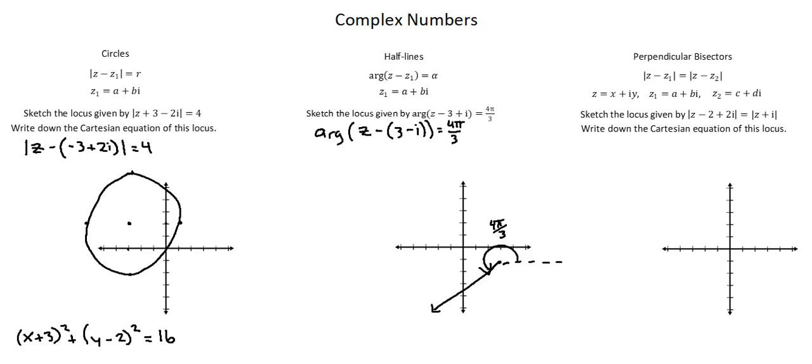Now, perpendicular bisectors. Our general equation, the modulus of z minus z1 equals the modulus of z minus z2, where z equals x plus iy, z1 equals a plus bi, and z2 equals c plus di. Our requirement, sketch the locus given by modulus z minus 2 plus 2i equals modulus z plus i.